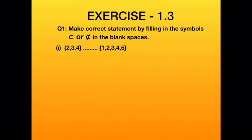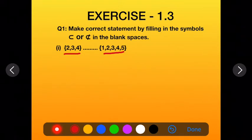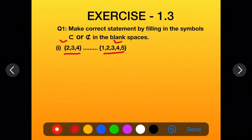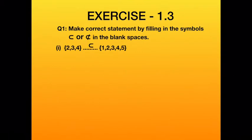The first part: we are given the set {2, 3, 4} and the set {1, 2, 3, 4, 5}. We have to check whether the first set is a subset or not. As we read in the previous lecture, a set is a subset of another when all its elements are included in the other set. Since 2, 3, 4 are all present in {1,2,3,4,5}, this set is a subset. So in the blank, write the subset symbol.